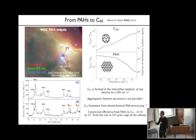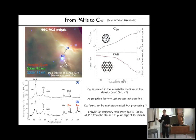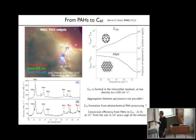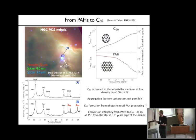The idea is: can C60 formation be due to the photochemical processing of PAHs? Because you see PAHs disappearing and C60 being formed, it's a very natural thing to say well maybe you convert PAHs into C60. If you believe this, you find that the conversion efficiency from PAHs to C60 is about 0.1% at a distance of 15 arcseconds from the star on a timescale of about 10^5 years—the age of the nebula.